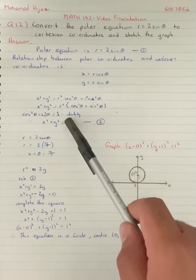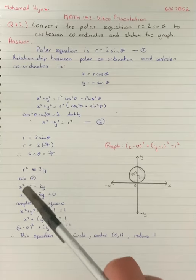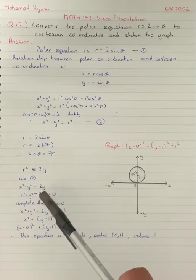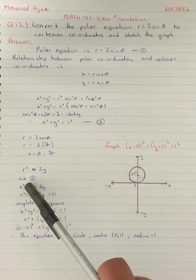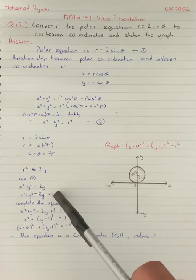Since r² appears in both equations, we substitute equation 2 into this equation to get x² + y² = 2y. Moving y to the other side, we get x² + y² - 2y = 0.